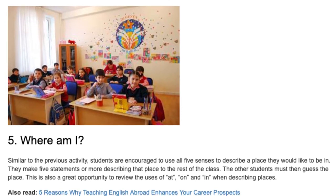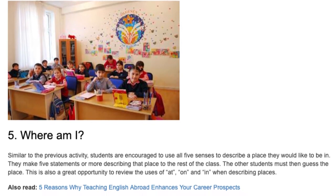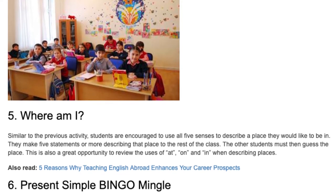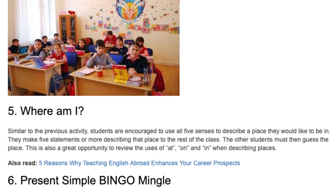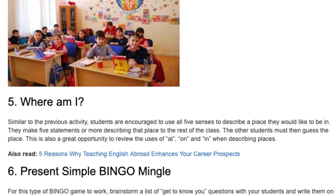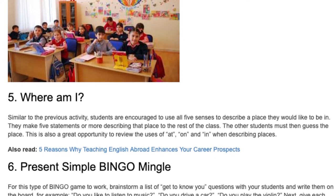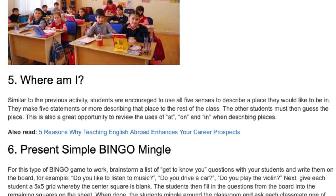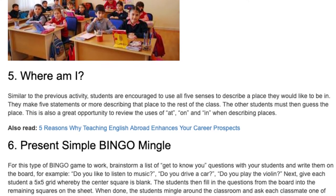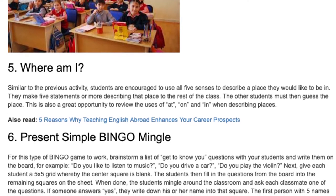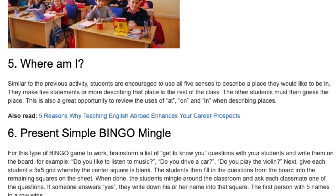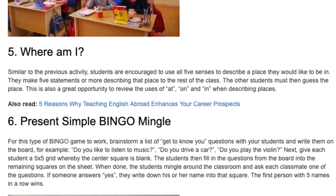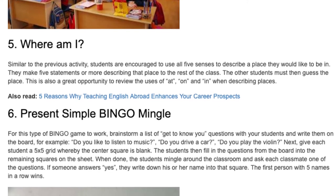5. Where Am I? Similar to the previous activity, students are encouraged to use all five senses to describe a place they would like to be in. They make five statements or more describing that place to the rest of the class, and the other students must guess the place. This is also a great opportunity to review the uses of 'at,' 'on,' and 'in' when describing places.